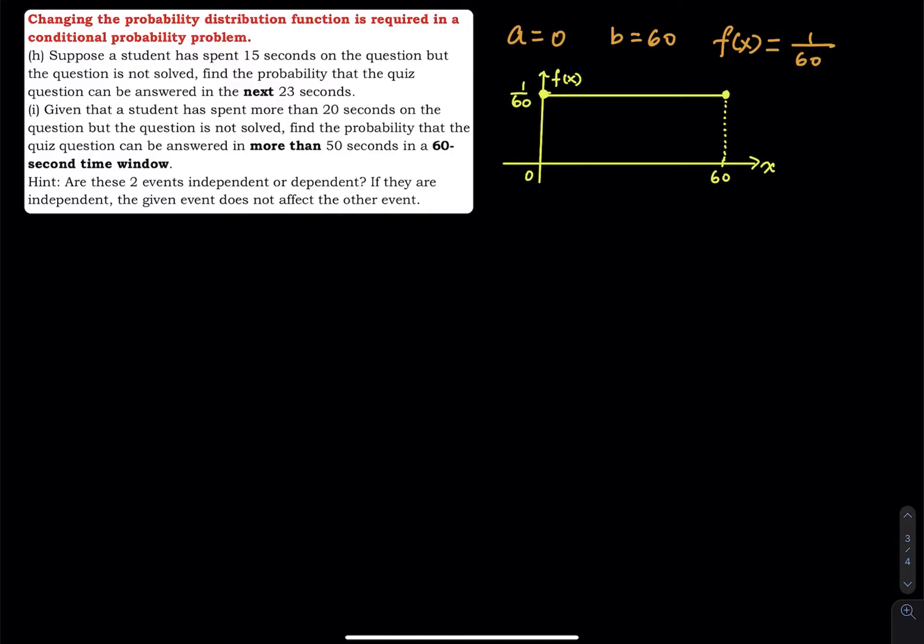So suppose a student has spent 15 seconds on a quiz question, but the question is not solved. Find the probability that the quiz question can be answered in the next 23 seconds. So in part H,